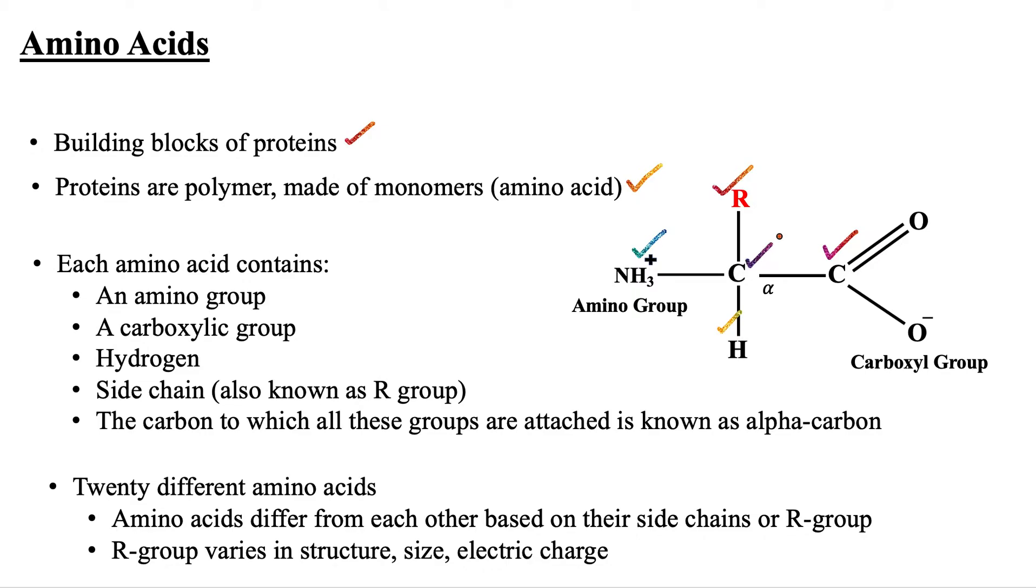There are 20 different amino acids that differ from each other based on their side chain or R group. This R group varies in structure, size, and electric charge, meaning some R groups might be quite big while others are small, some positively charged and others negatively charged.